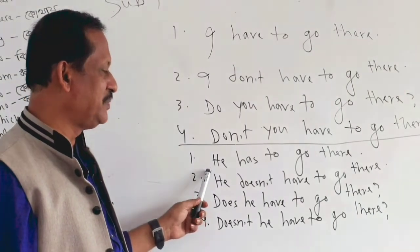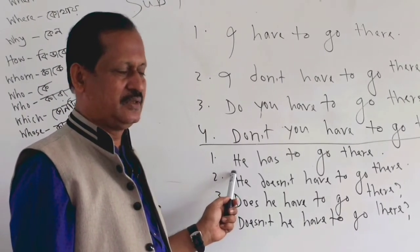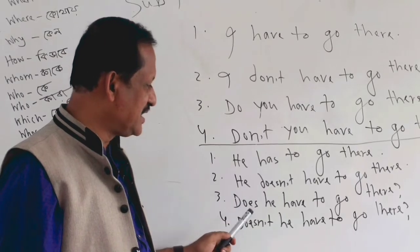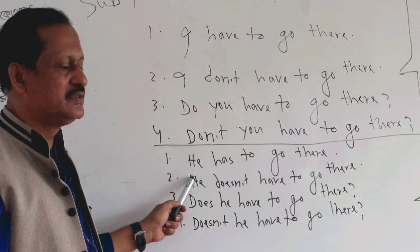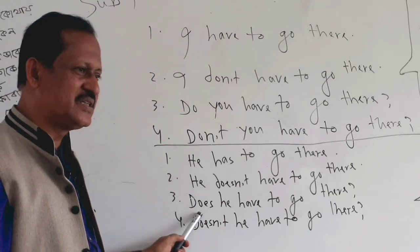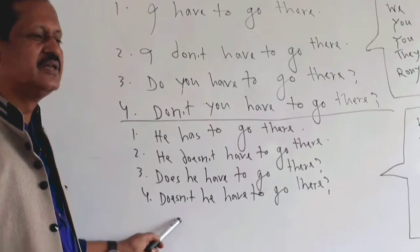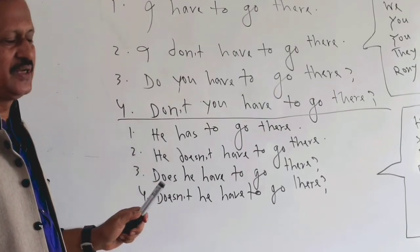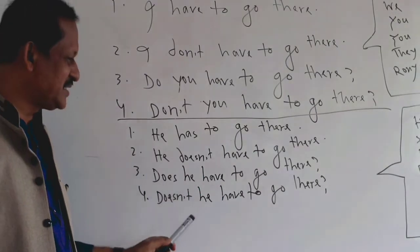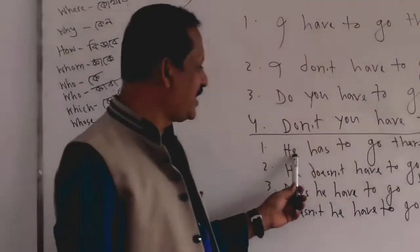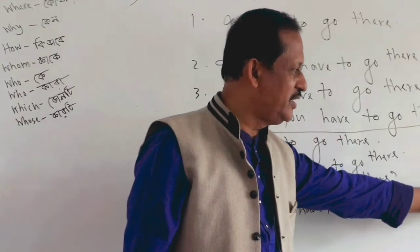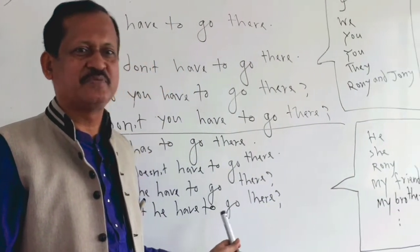He has to go there. He doesn't have to go there. Does he have to go there? Doesn't he have to go there? Very good practice. We asked him to act it out and he did. 'He' could be Ronnie, my friend, my brother, and others — we have to practice this way.